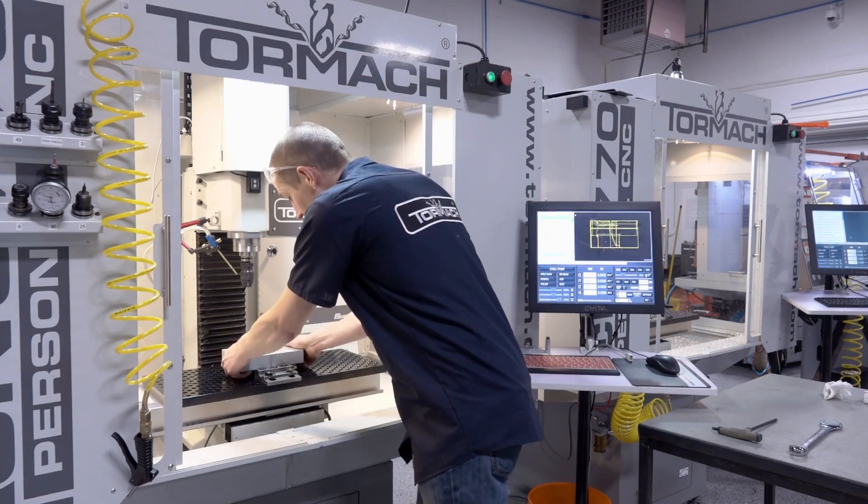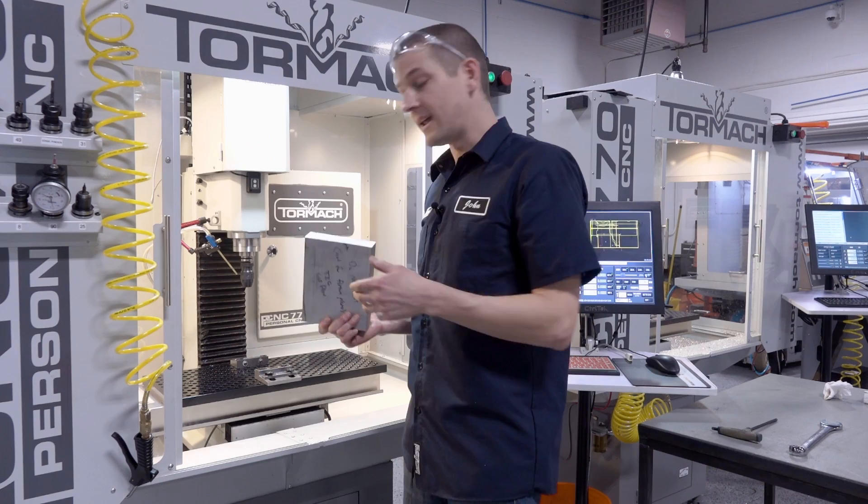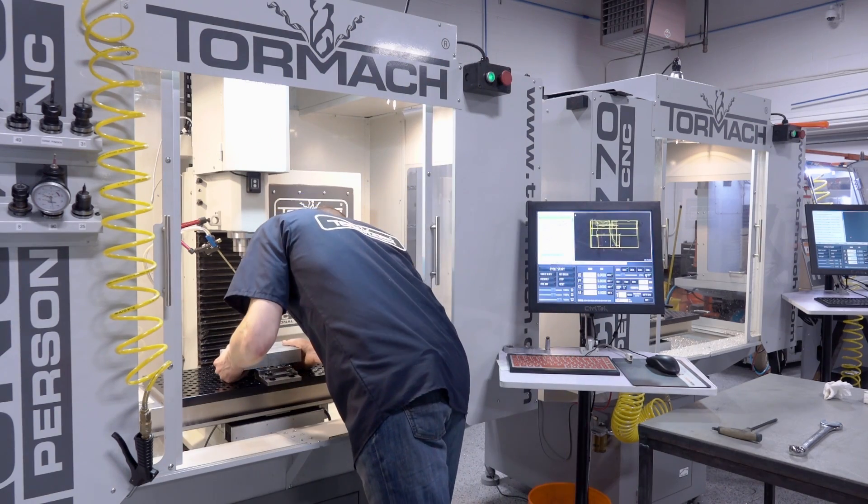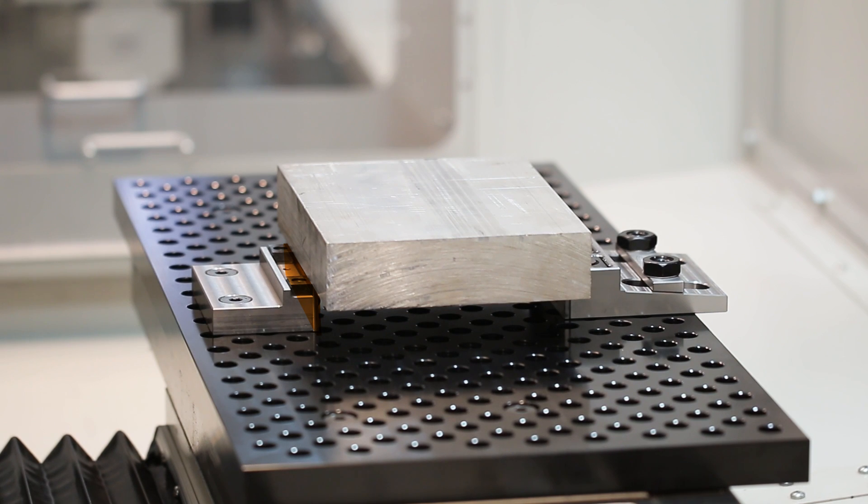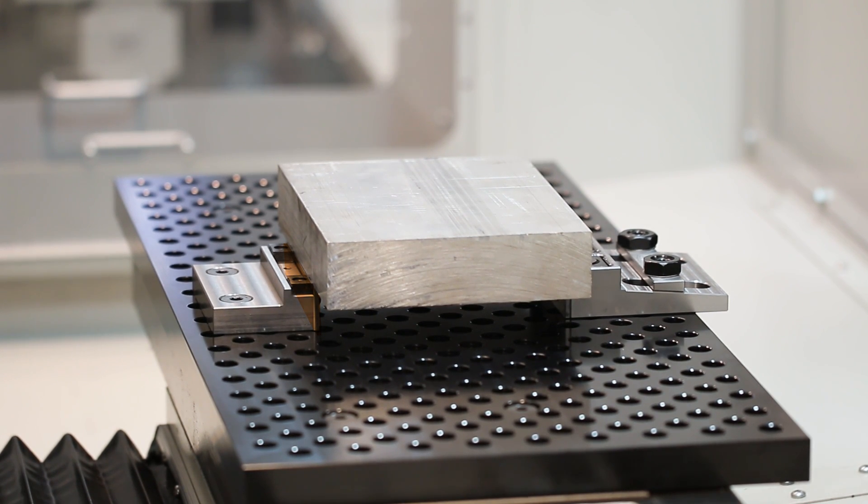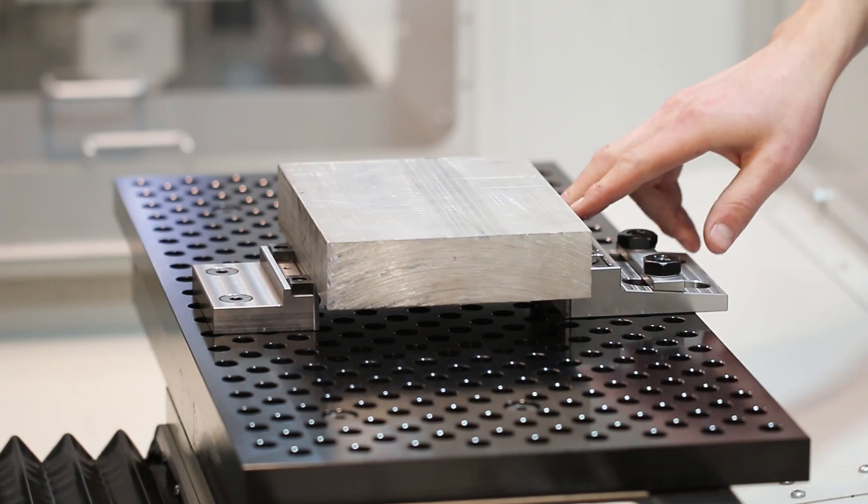And so again at this point it's okay to be able to take the part in and out. The way the mod vise system works is the part is squared up against the fixed position and the four posts of the adjustable side allow you to keep it square when you tighten it in place.